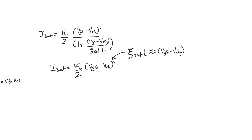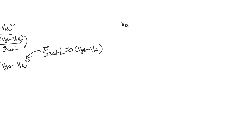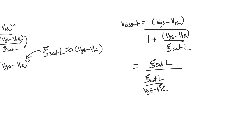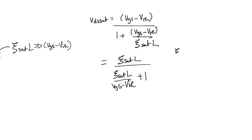For a short channel transistor, we return to the expression for VDS_SAT: (VGS minus VTH) divided by (1 plus (VGS minus VTH) over ESAT·L). Because ESAT·L is small — much smaller than VGS minus VTH — this quantity disappears, and VDS_SAT reduces to approximately ESAT·L.